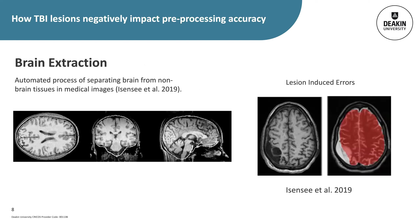Brain extraction employs automated methods to separate brain from non-brain tissue, creating a mask of the brain only — a crucial first step. Brain extraction is difficult to get right even in healthy brains. Methods focusing on signal intensity or the longest single continuous boundary are often thrown by bright spots connecting brain and non-brain tissue, such as the optic nerve. For TBI patients with focal lesions at the cortical surface, the brain boundary no longer follows expected curvature or signal intensities, resulting in non-brain tissue being incorrectly included or brain tissue being incorrectly excluded from the mask.